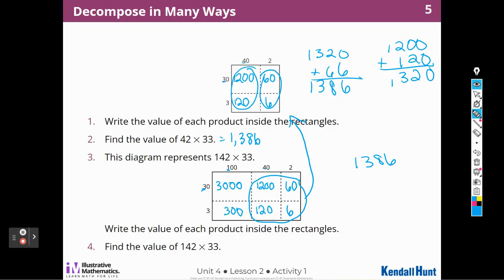So now all I have to do is add this. Well, 3,000 plus 300 is going to be 3,300. So now I can add those together really quickly and get 4,686. So the product or the value of the product, 142 times 33 will be 4,686.